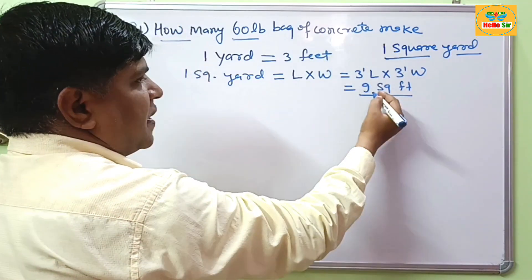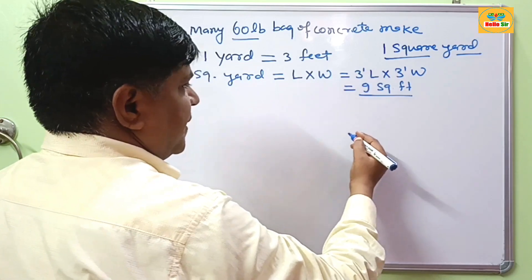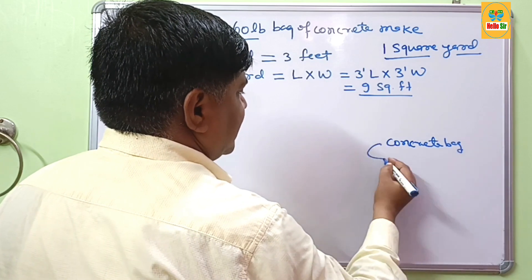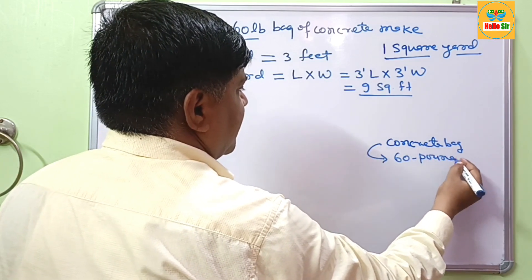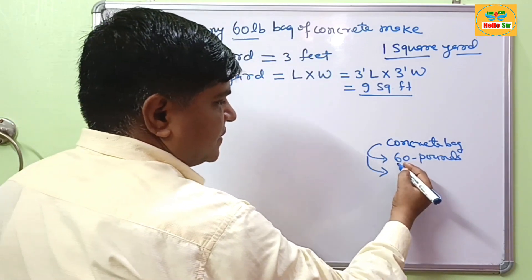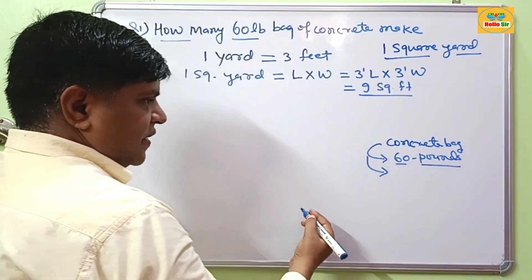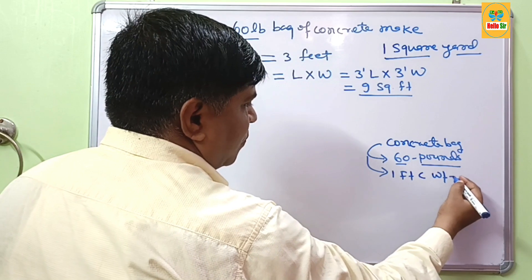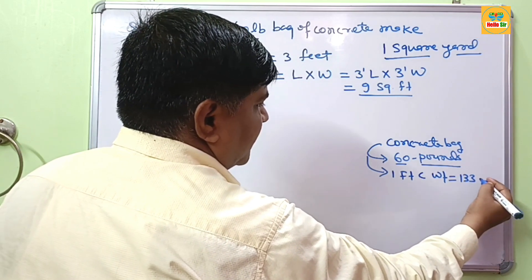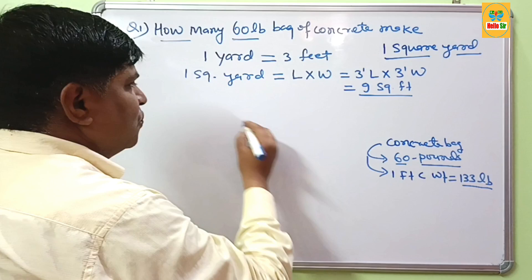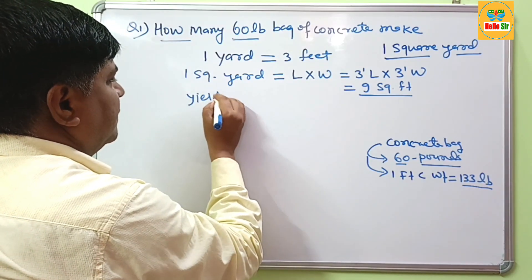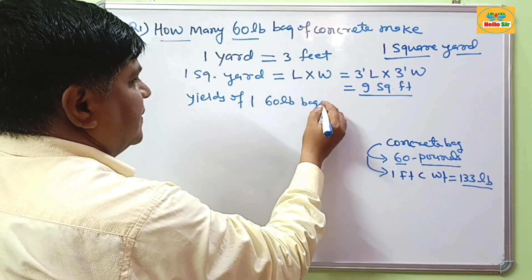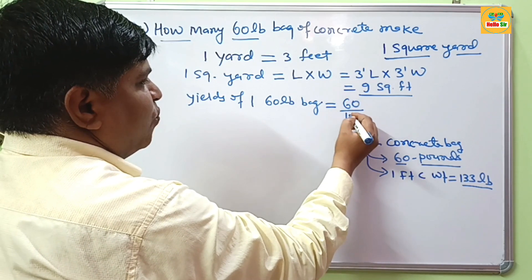It means 1 square yard equals 9 square feet. And your concrete bag size is 60 pounds. How much volume of 60 pound bag of concrete? You know that 1 cubic foot of concrete weighs about 133 pounds. And if you want to calculate yields of 1 60-pound bag, it means 60 divided by 133.